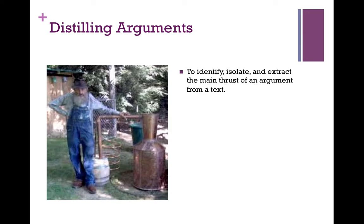You might start with, say, five gallons of this mash and end up with maybe half a liter of actual distilled whiskey. I'm using that as a metaphor for what we're doing with arguments — you start with this large text and then you boil it down to just the key ingredients that are absolutely necessary. This is also a helpful way to distinguish diagramming from distilling: you talk about distilling alcohol, but you don't talk about diagramming alcohol. Distilling is breaking it down to its component parts — same thing for arguments.